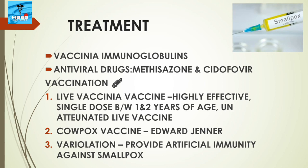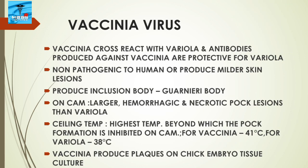The cowpox vaccine was discovered by Edward Jenner and was used before vaccinia vaccines were available. Variolation was the first attempt at providing artificial immunity against smallpox. The vaccinia virus cross-reacts with variola, and antibodies produced against vaccinia are protective for variola. It is non-pathogenic to humans or produces only mild skin lesions.